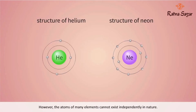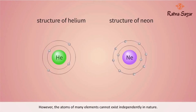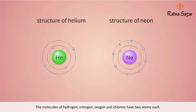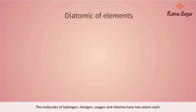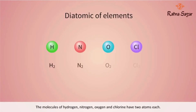However, the atoms of many elements cannot exist independently in nature. The molecules of hydrogen, nitrogen, oxygen, and chlorine have two atoms each. They are known as diatomic elements.